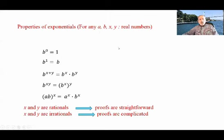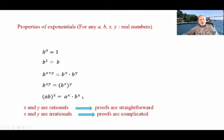Now, a, b, x, y are real numbers. b to the power 0 is 1. b to the power 1 is b. b to the power x+y equals b to the power x times b to the power y. b to the power xy equals b to the power x, to the power y — or b to the power y to the power x; it's the same. And (ab) to the power x equals a to the power x times b to the power x. If x and y are rationals, the proofs follow directly from the definition. If x and y are irrationals, the proofs are more complicated.